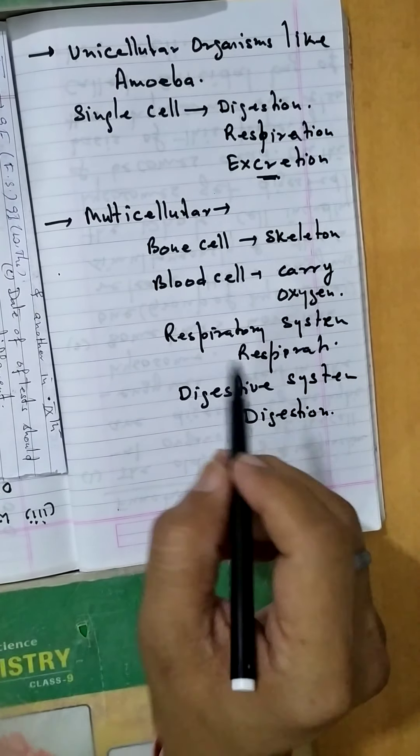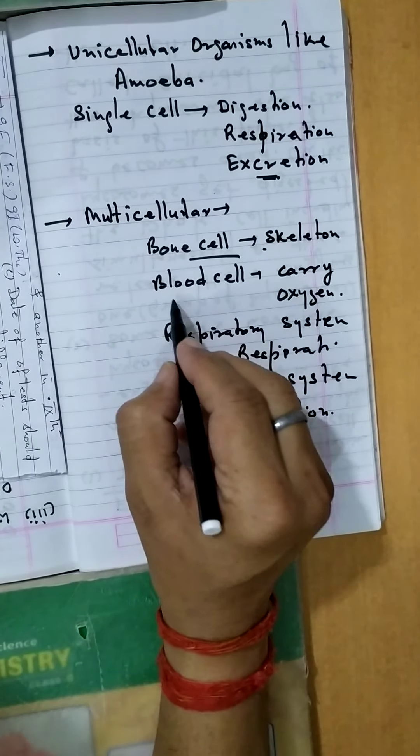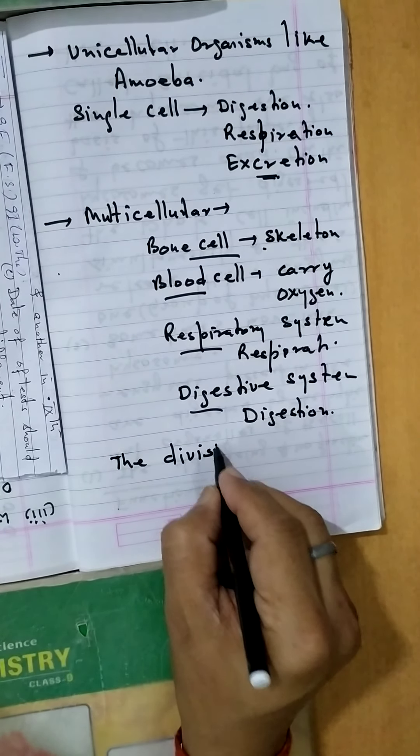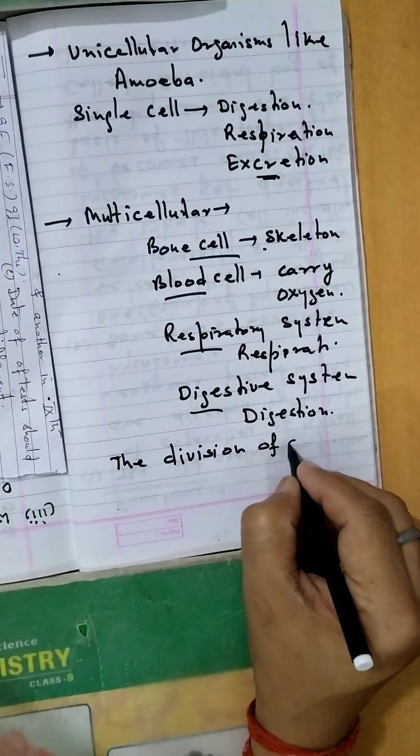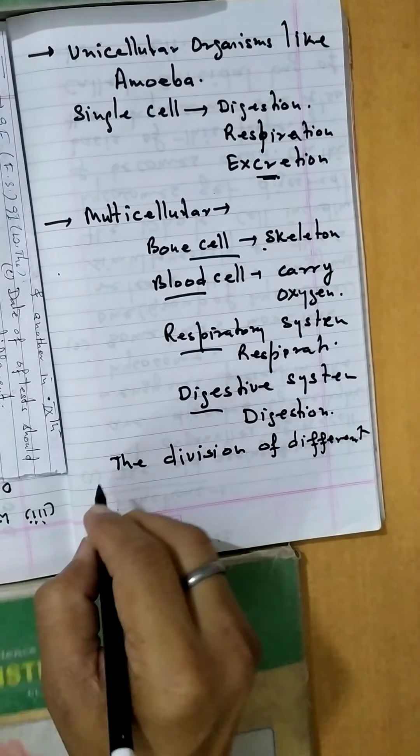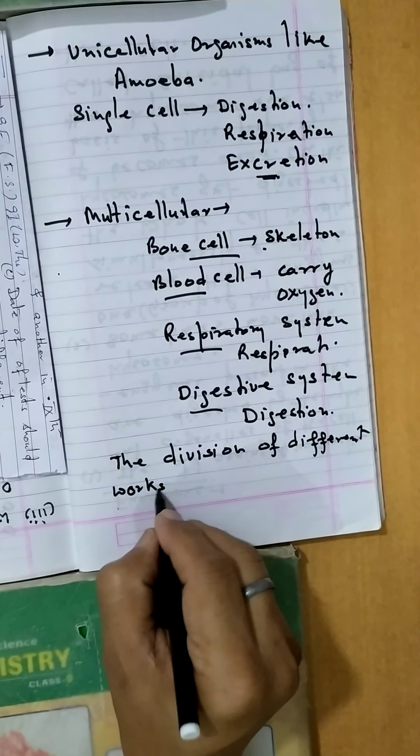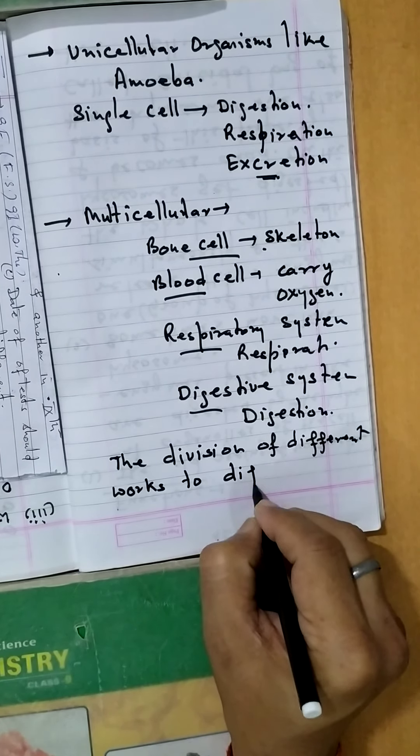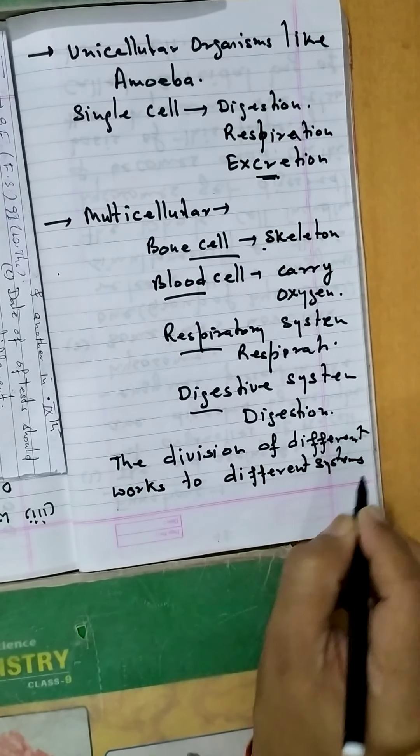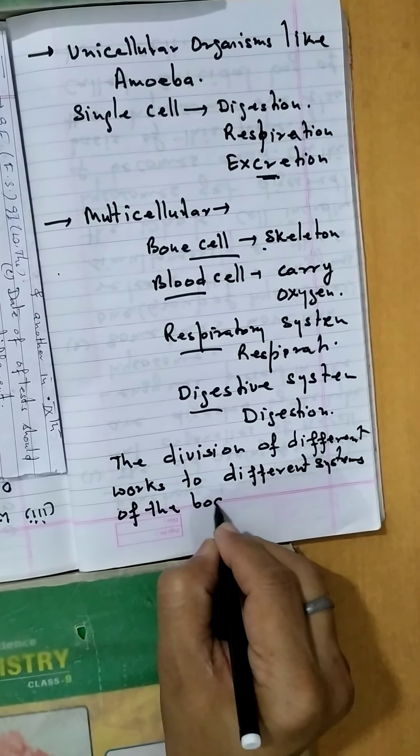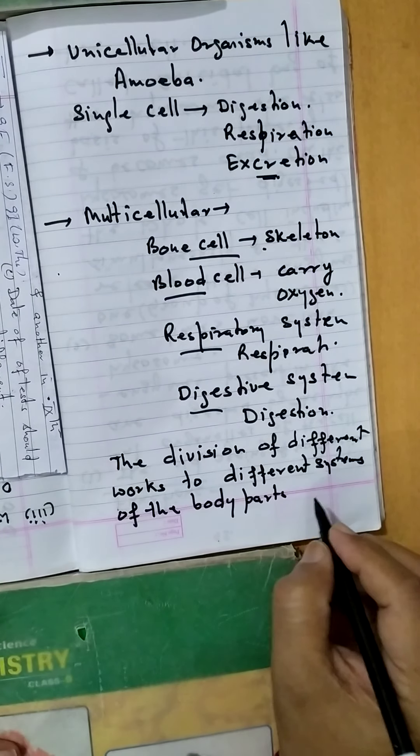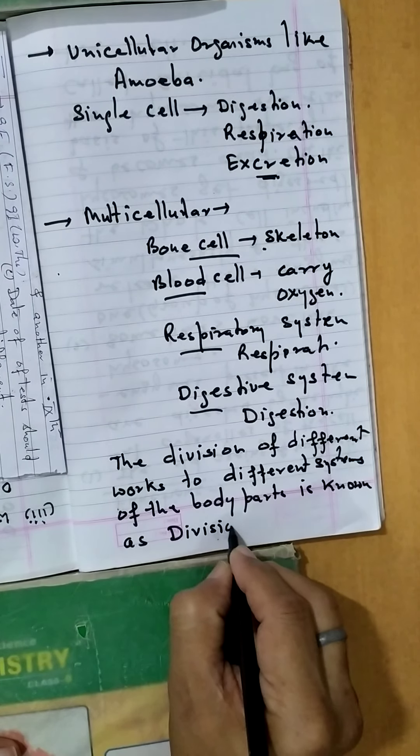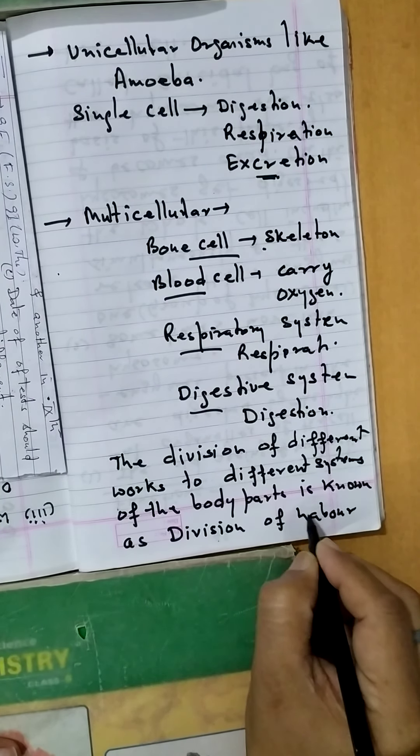So such work division by different parts, the division of different work to different systems of the body parts, is known as division of labour.